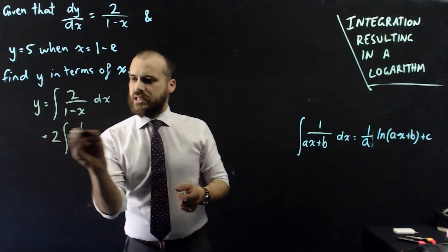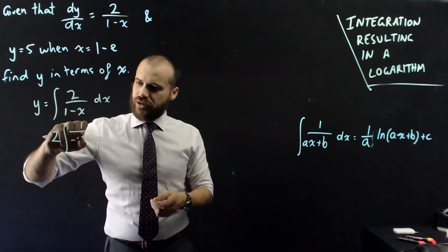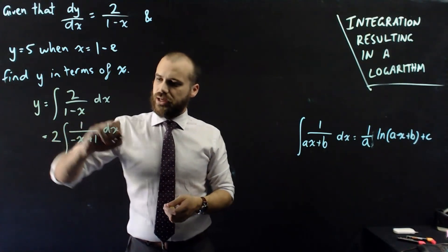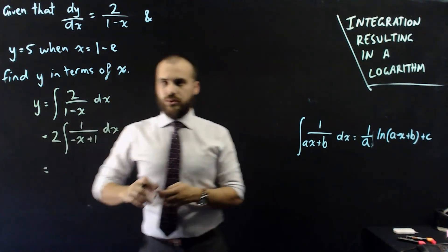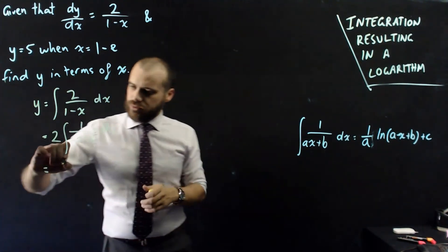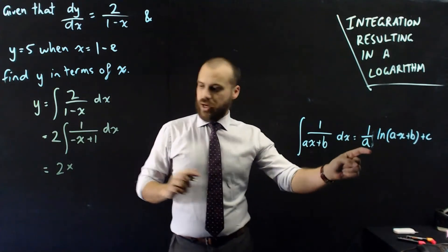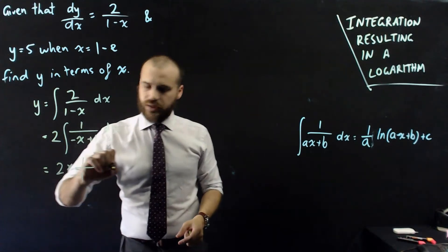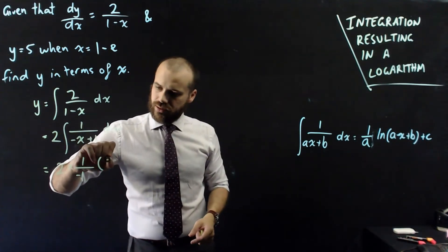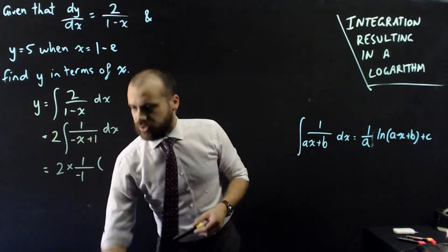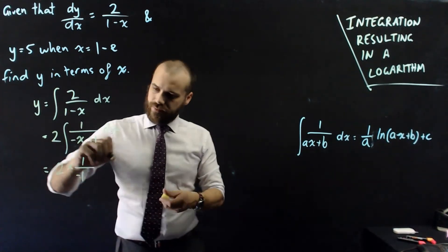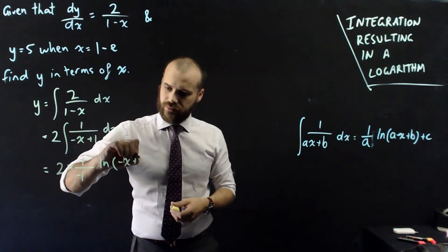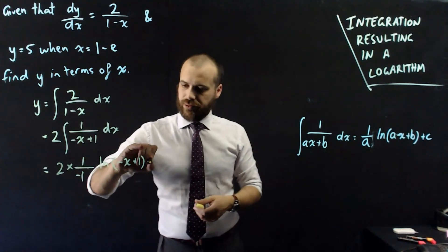So, I might just, for the ease of doing this, I might just rewrite it in that form with respect to x. All right, so, what's that going to equal? It's going to equal 2 times 1 on a, which is 1 on a, which is negative 1, times... I don't really need a bracket, do I? Okay, ln, negative x plus 1, plus c.